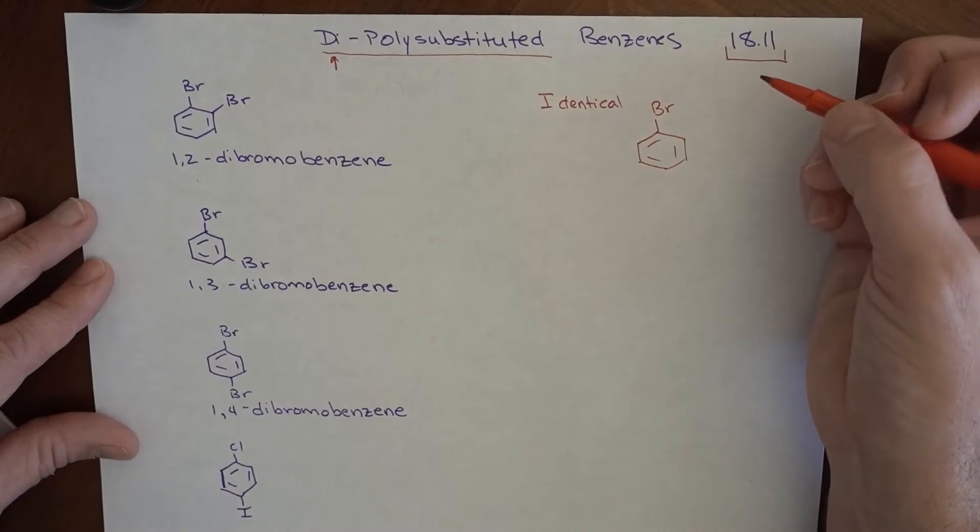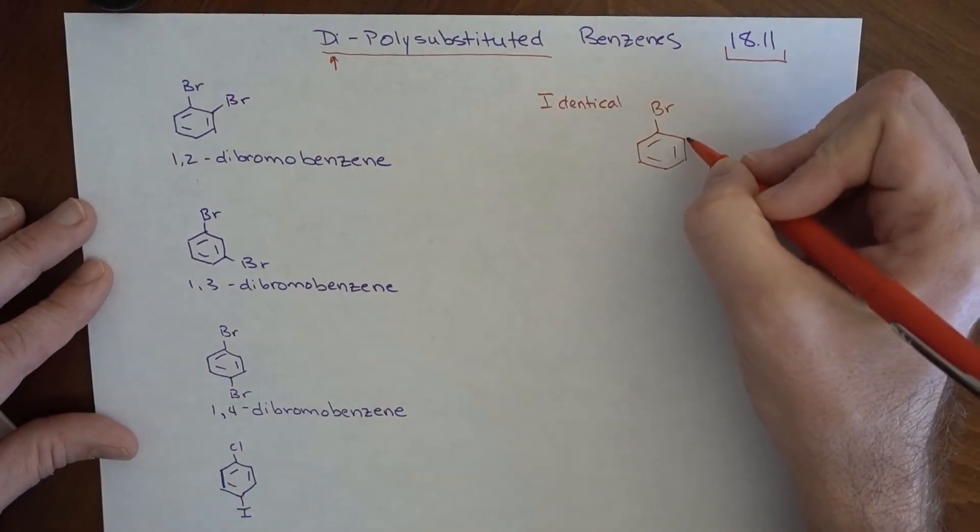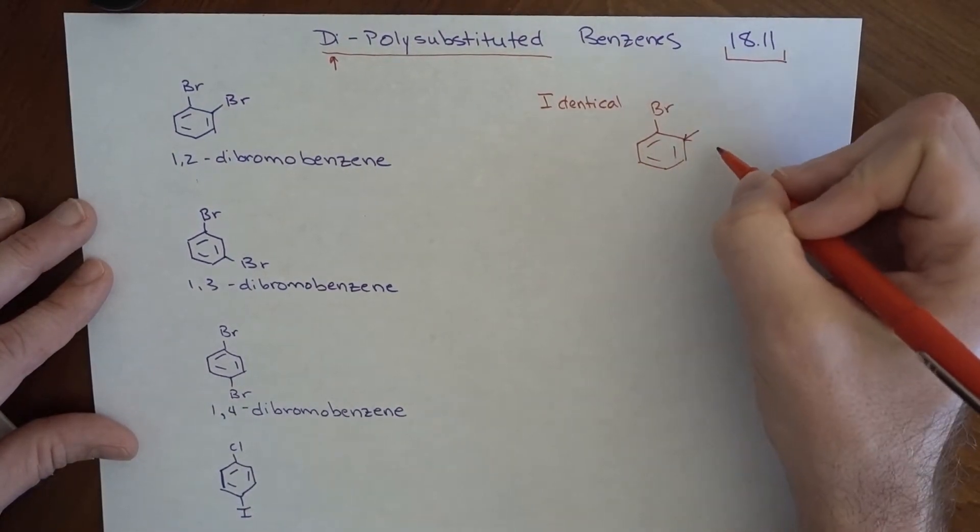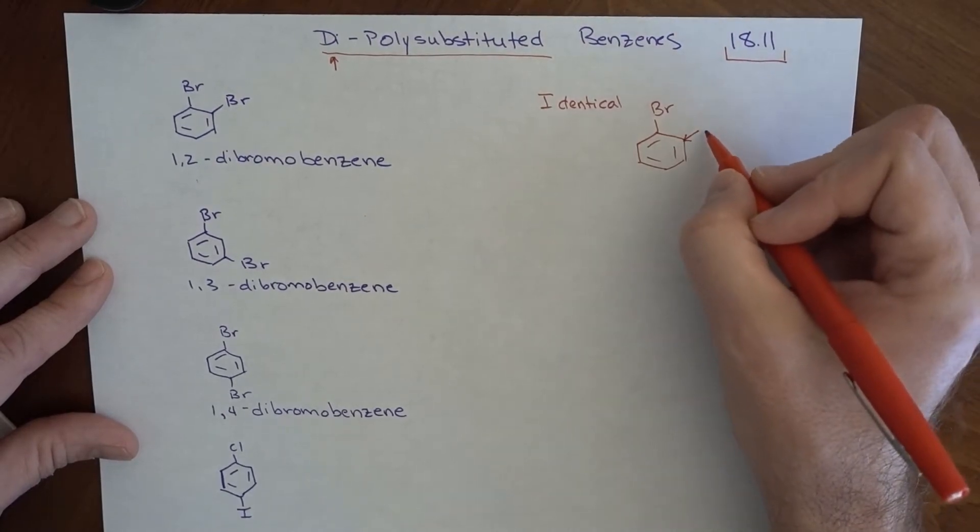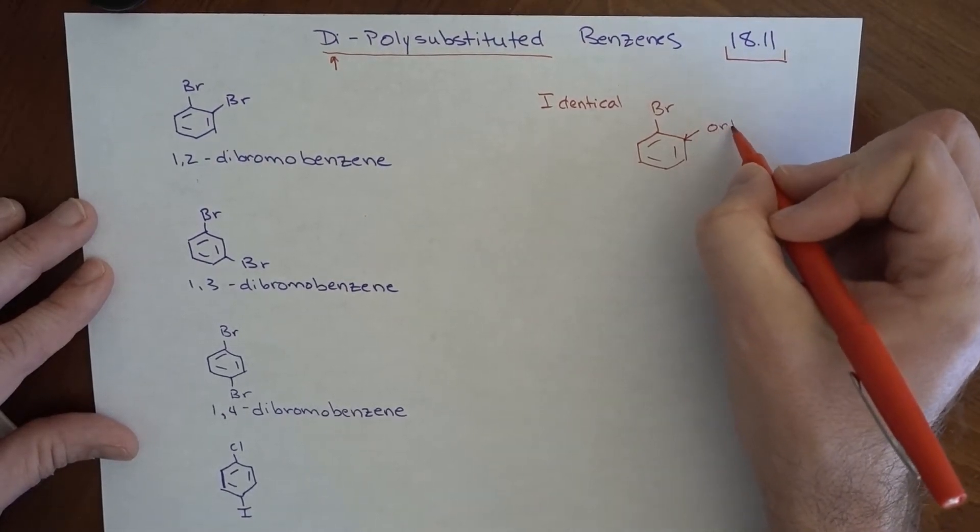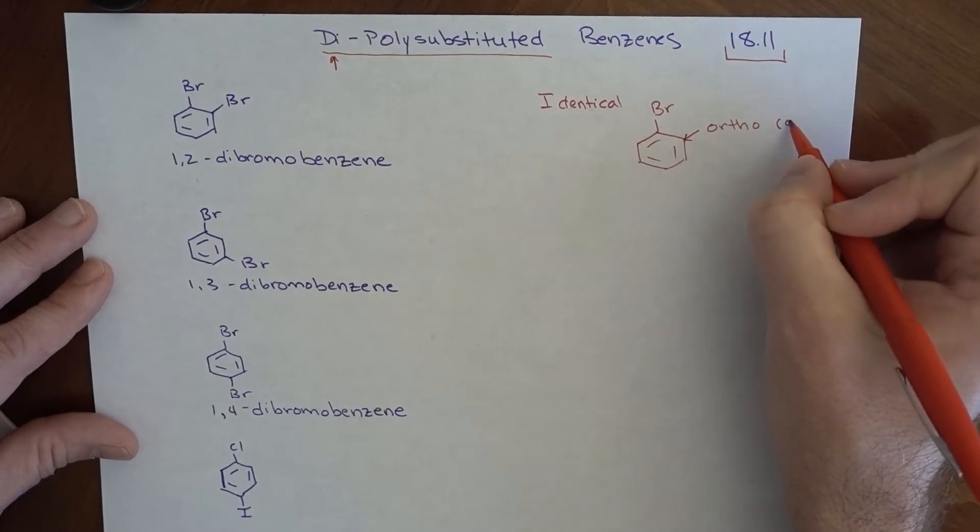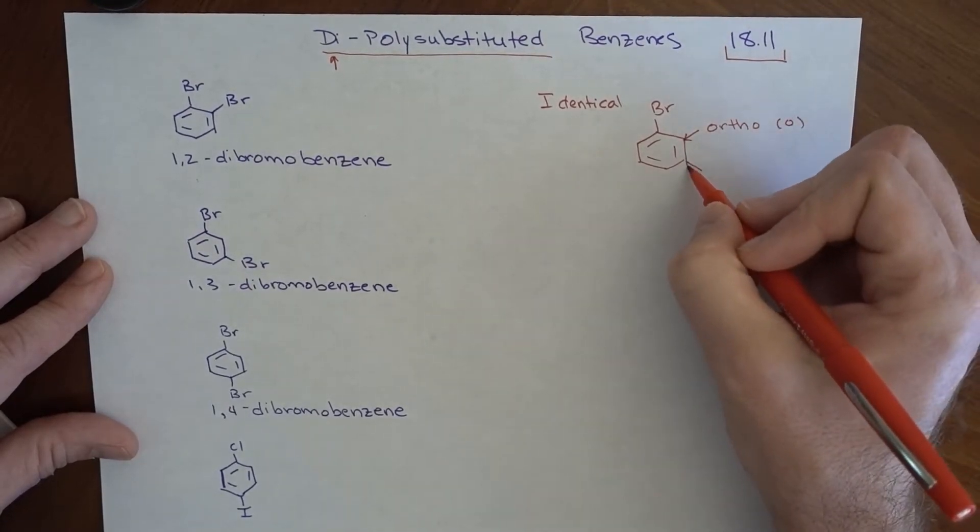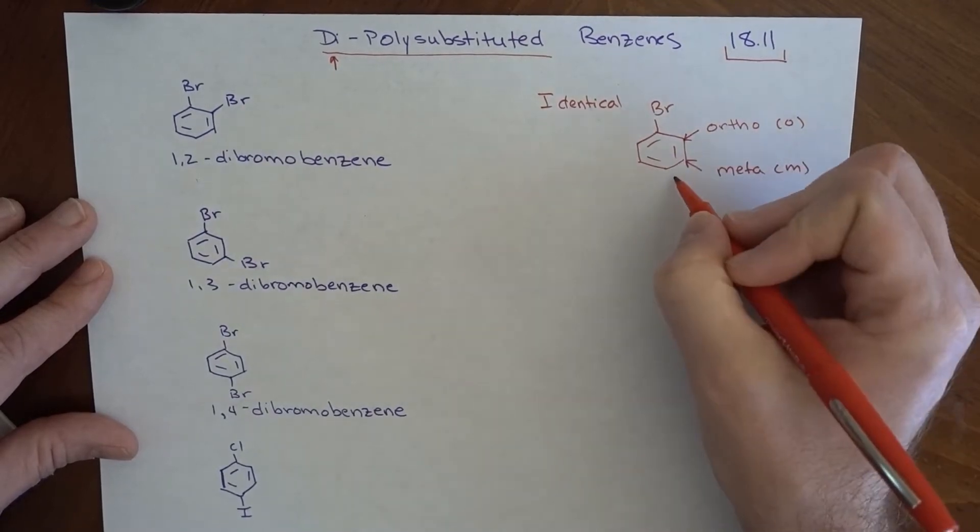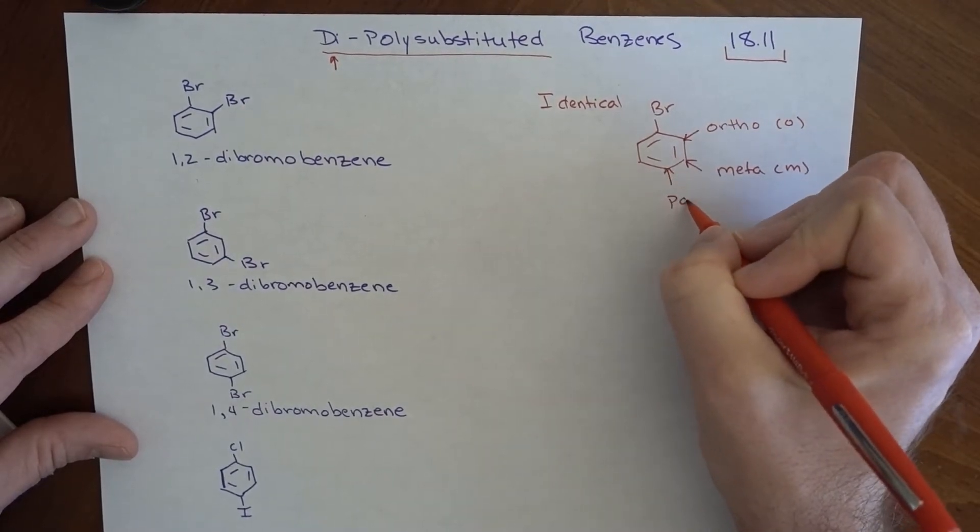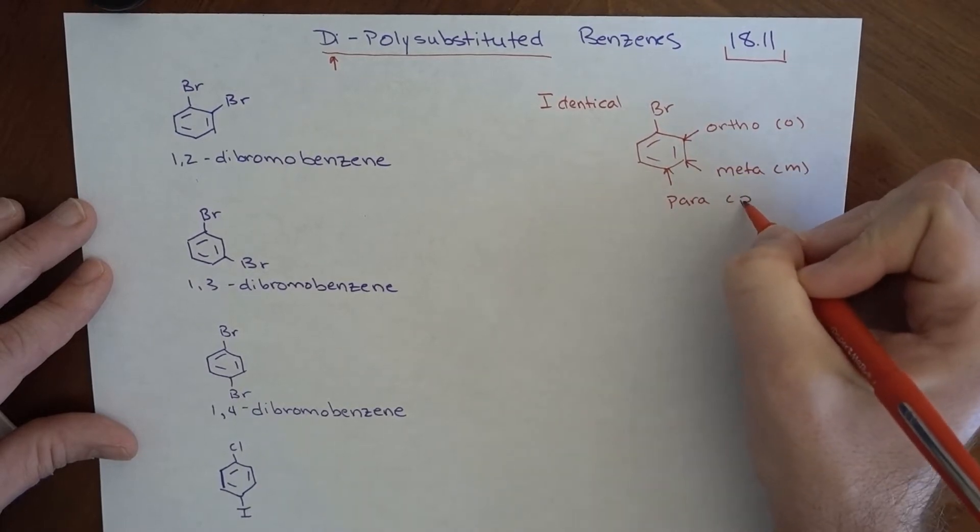I can actually, in a common nomenclature, identify these other positions, not necessarily with numbers, but with symbols. This is the ortho position, symbolized with an O, this is the meta position, symbolized with an M, and this is the para position, symbolized with a P.